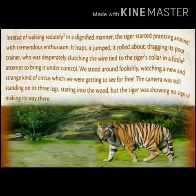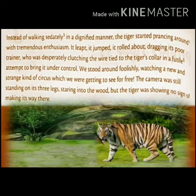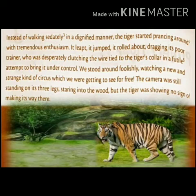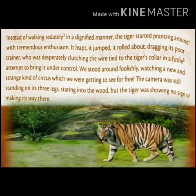Instead of walking sedately — meaning calmly and slowly — in a dignified manner, the tiger started pranking around with tremendous enthusiasm. Pranking around means moving quickly with large steps and excitement. It leaped, it jumped, it rolled about, dragging its poor trainer who was desperately clutching the wire tied to the tiger's collar in a futile — meaning unsuccessful — attempt to bring it under control. The tiger was not walking slowly as expected; it jumped out full of excitement and dragged its trainer, whose attempt to control it was totally unsuccessful.